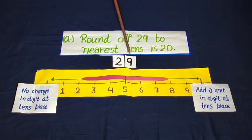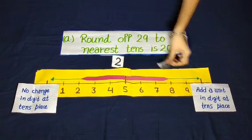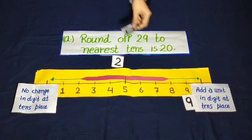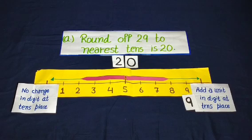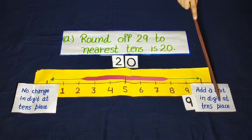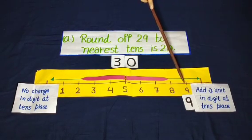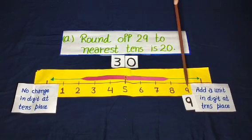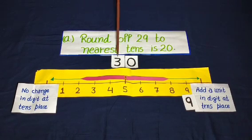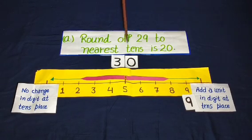Here the number is 29 and 9 is at the ones place. Now put 0 for the ones place. Since 9 is at the ones place, add a unit to the digit at the tens place. So now 2 becomes 3. So round of 29 to nearest tens is 30. Therefore, statement A — round of 29 to nearest tens is 20 — is false.